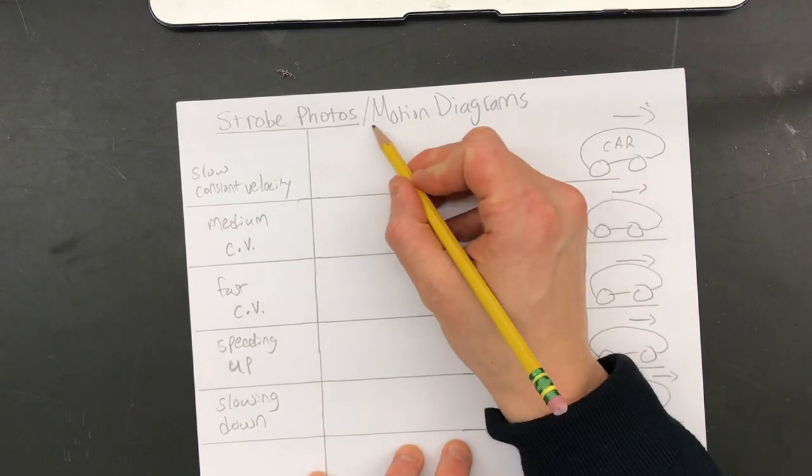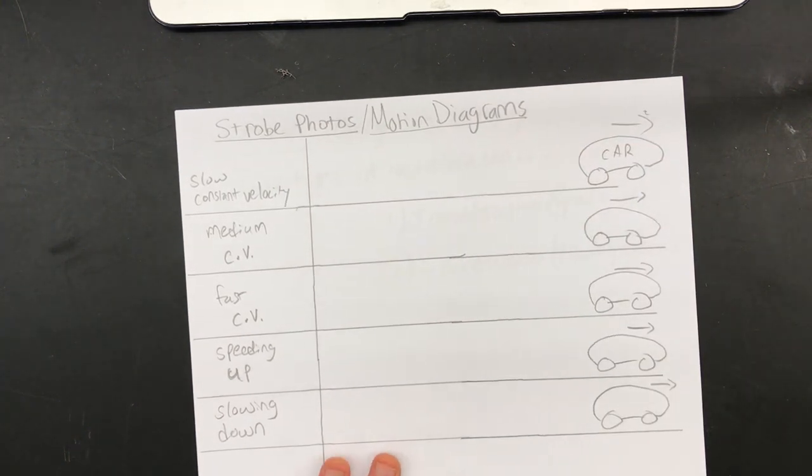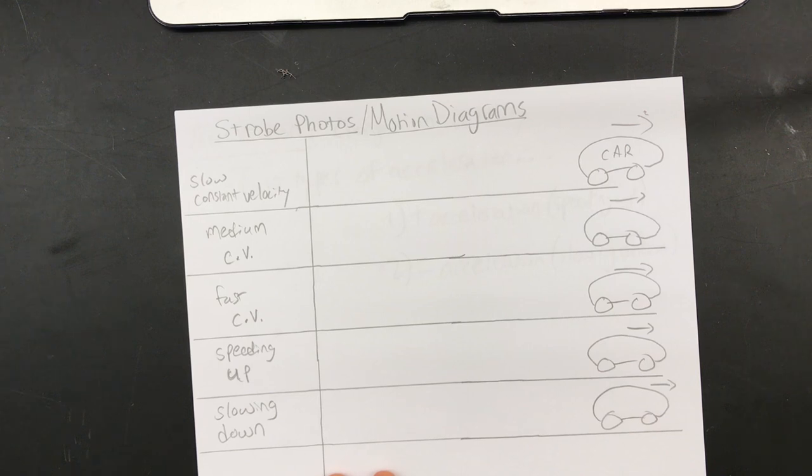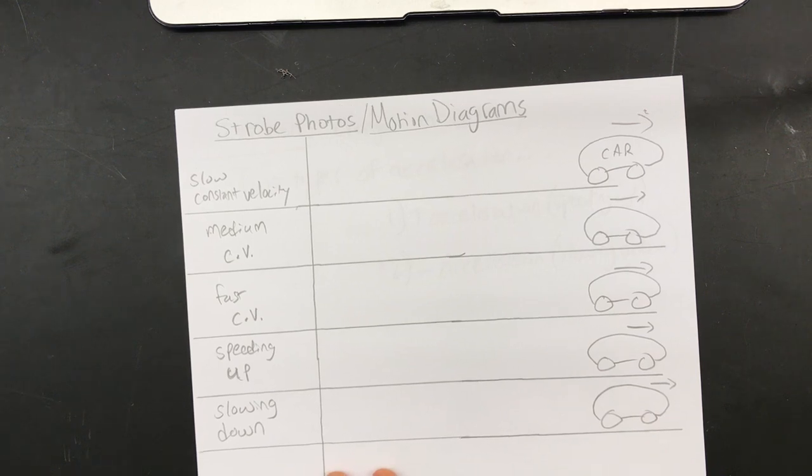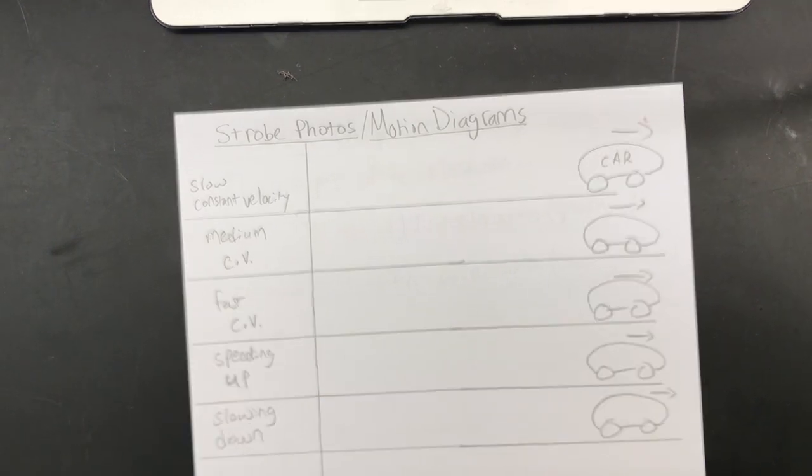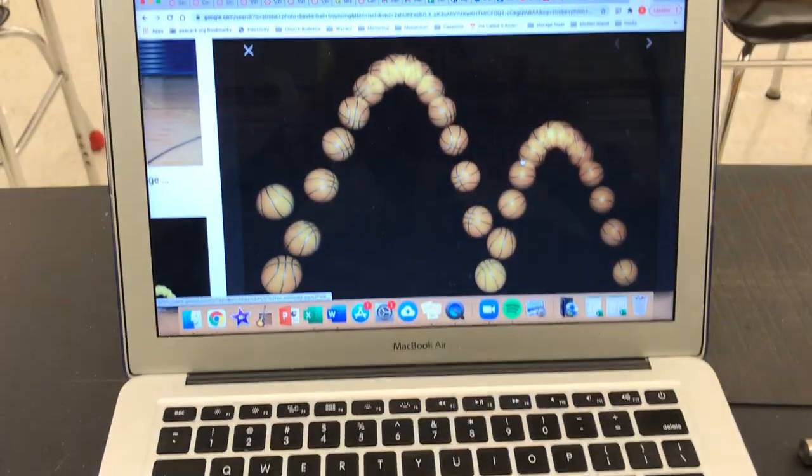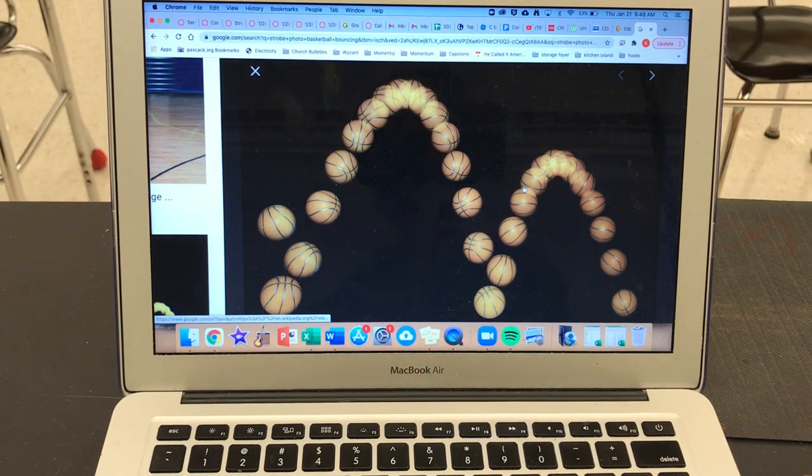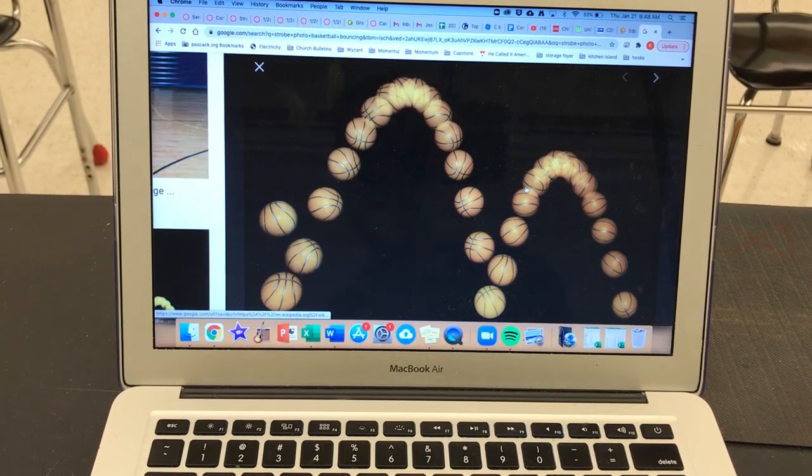It's about motion diagrams or strobe photos, you could call them either. So you've looked at them with a demo with rubber stoppers. Now we're going to show you something called the strobe photo here on my computer. Okay, so that is a strobe photo.